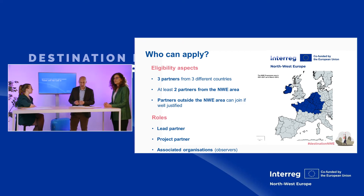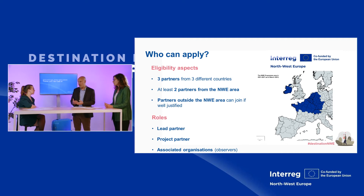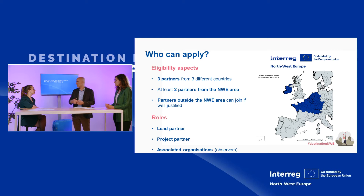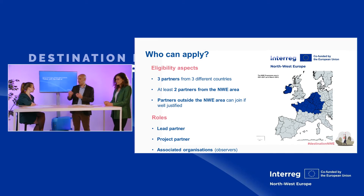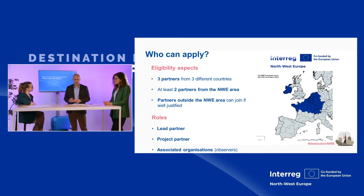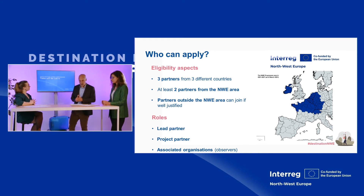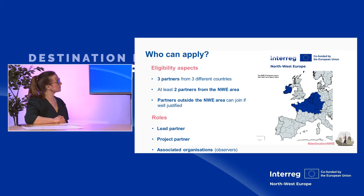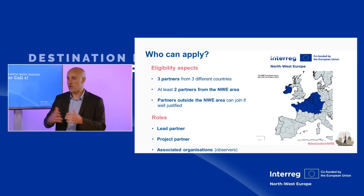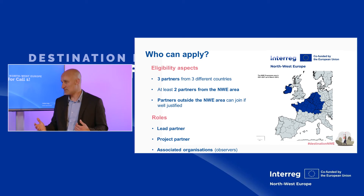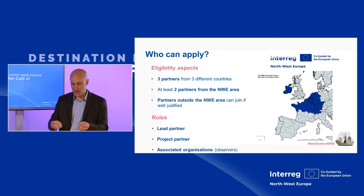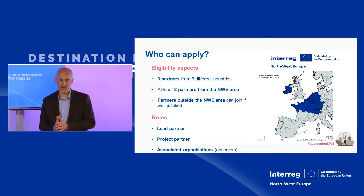Regarding roles, the lead partner principle still applies: one partner acts as lead partner, is in charge of drafting and submitting the application form, and will later be the main contact person for the Joint Secretariat and program bodies. Importantly, the lead partner must be a public or nonprofit organization. Project partners contribute to the delivery of the project, and different levels of involvement are possible — a partner does not need to be involved in all work packages and can have a limited scope and budget.